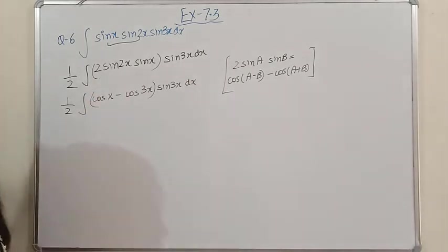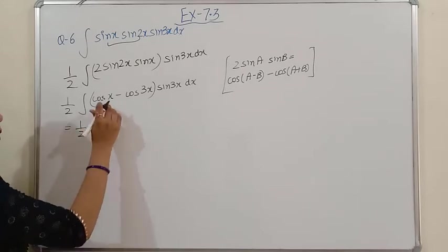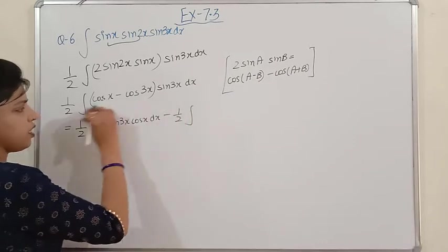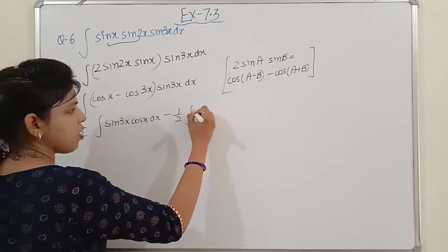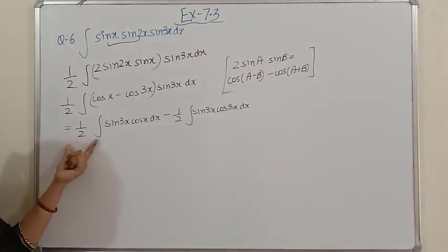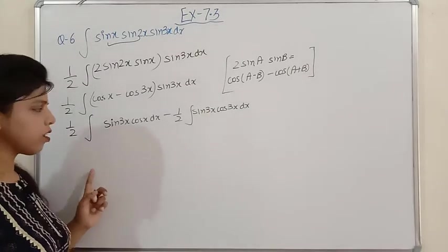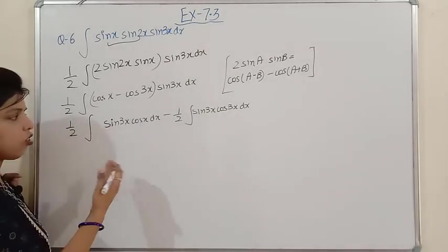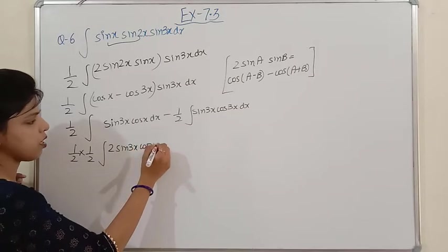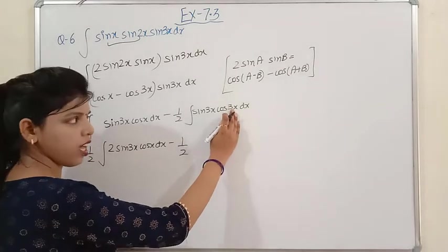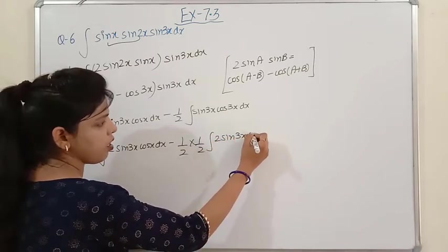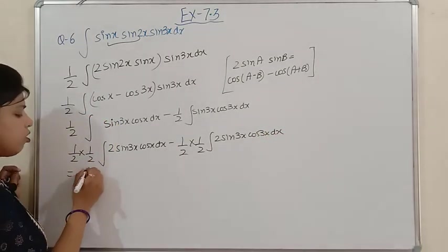Opening the brackets: (1/2)∫(cosx − cos3x)·sin3x dx = (1/2)∫sin3x·cosx dx − (1/2)∫sin3x·cos3x dx. For sin3x·cosx: multiply and divide by 2 to form 2sinA·cosB. The formula 2sinA·cosB = sin(A+B) + sin(A−B). Here A=3x, B=x gives sin4x + sin2x.